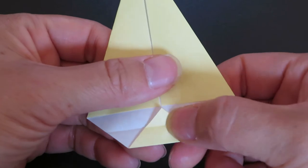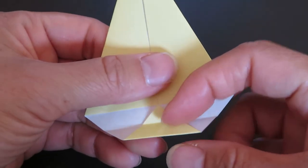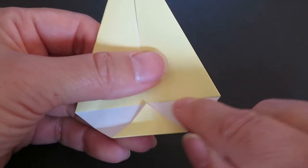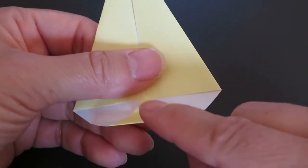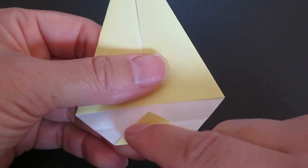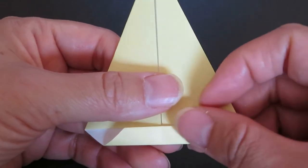One tip here is, if you open here, you need to tuck this triangle piece inside like this and fold up. Otherwise, this triangle will come out of this space.